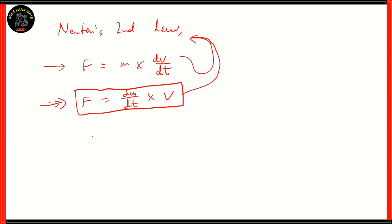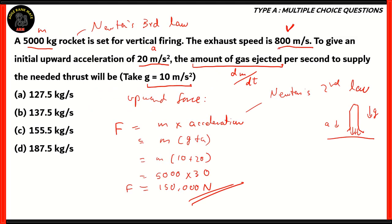So here, we need to find out dm/dt, that's the rate of loss of mass, by dividing force with velocity. We already know the velocity here to be 800 meters per second.